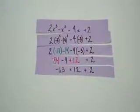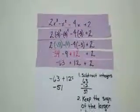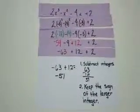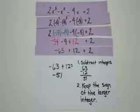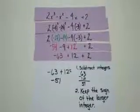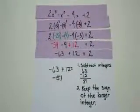Negative 63 plus 12 plus 2. We're going to be finding the difference because we have unlike signs. Negative 63 and 12, we have to find that difference, and because the negative is larger, the negative will be the overall sign there. It'll be negative 51.